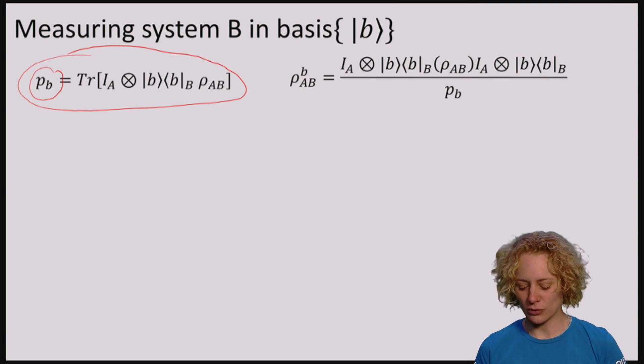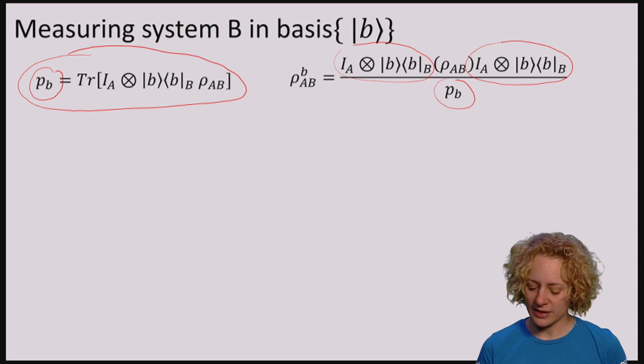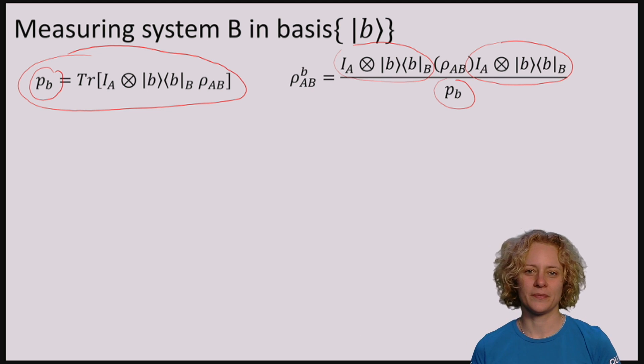What is the post-measurement state if I observe outcome B? So again, using our usual rules, the post-measurement state can be computed in terms of the measurement operators, meaning that we measure on B and we do nothing on A, normalized, namely divided by the probability, which is just a trace of the top.